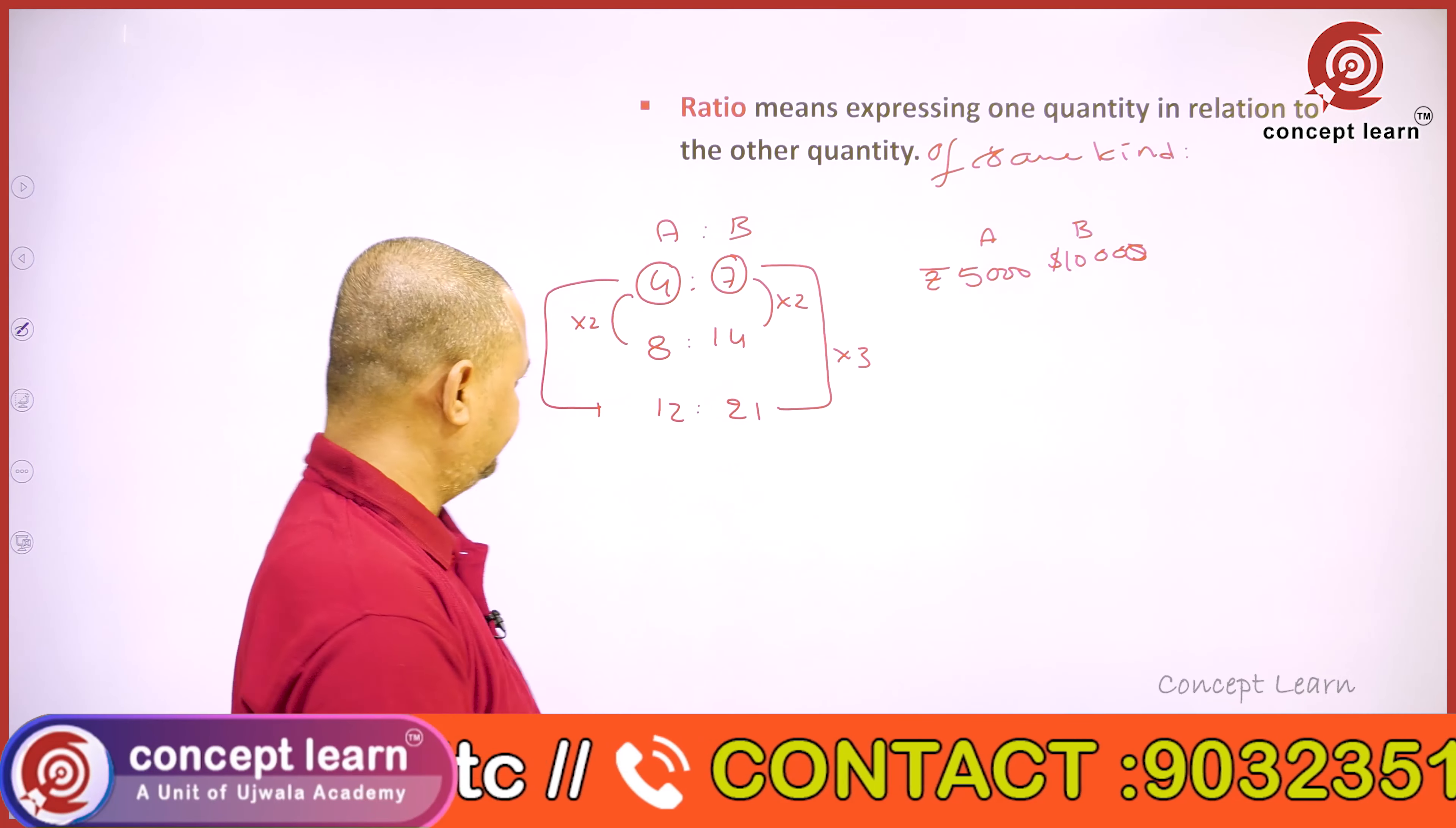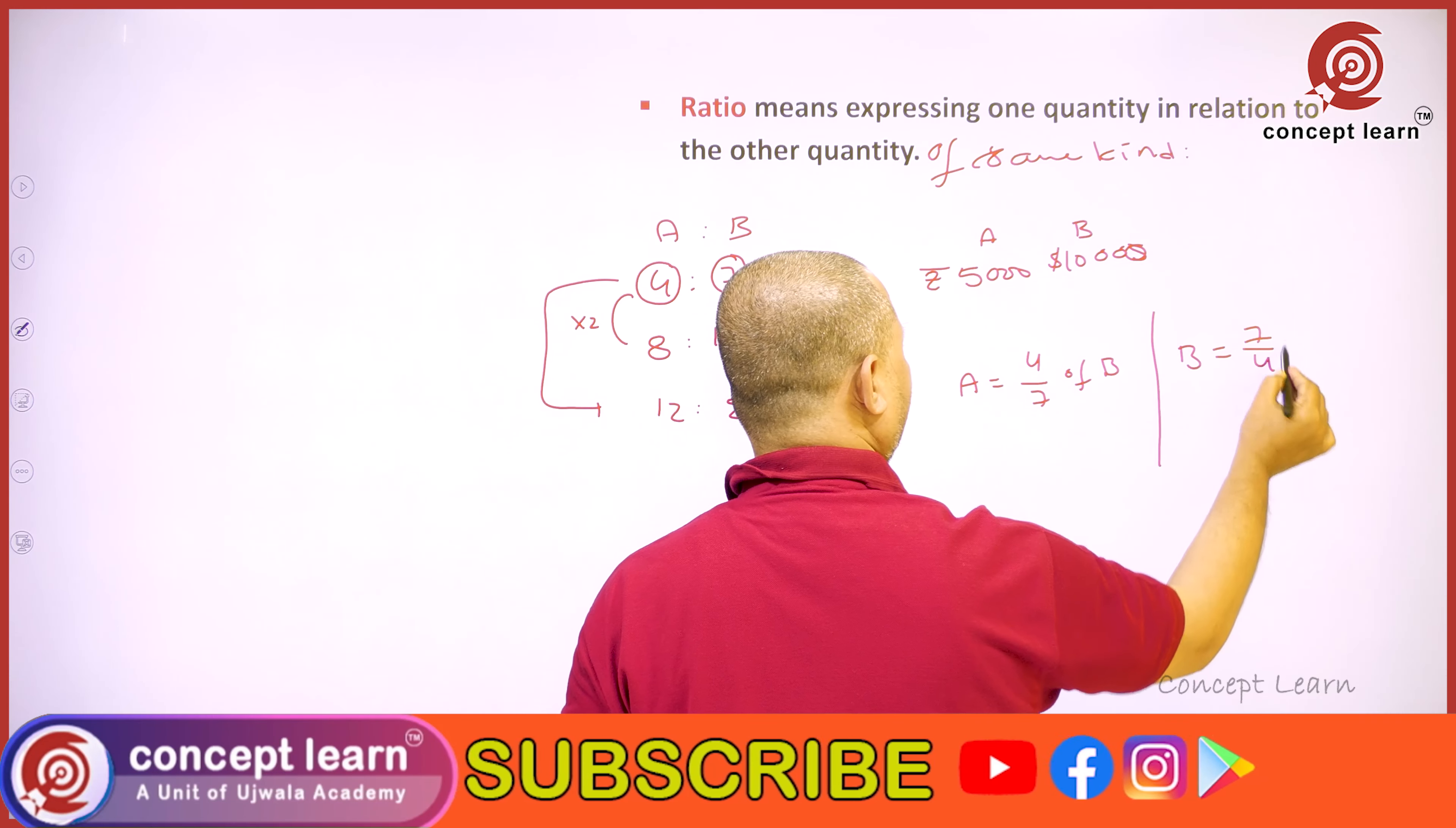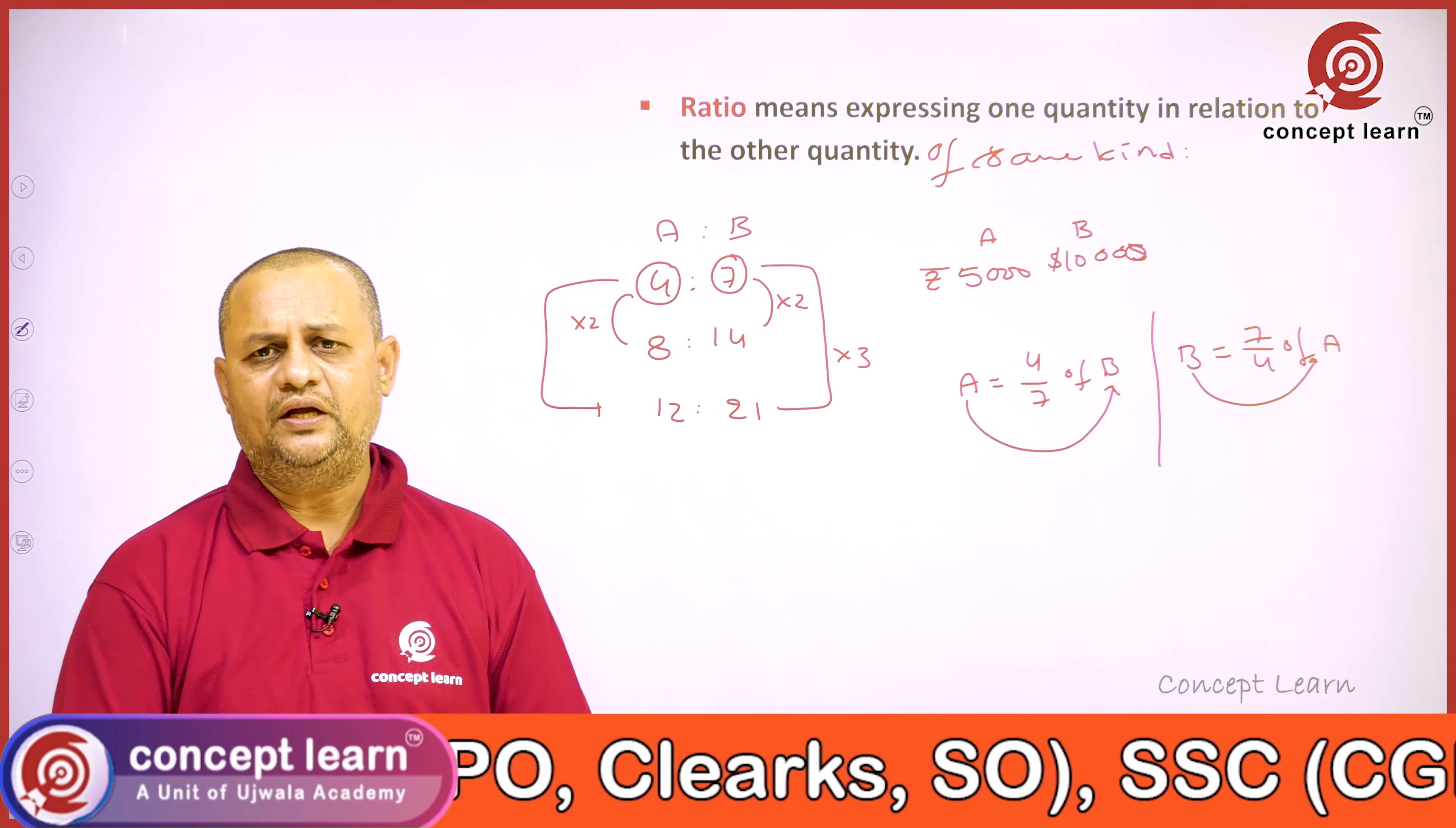Now, if A is to B as 4 is to 7, then what is A equal to? A equals 4/7 of B, or B equals 7/4 of A. Expressing one quantity in relation to the other quantity is called ratio.